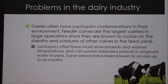The most common problems with leptospirosis are in the dairy industry. Dairies often have Leptospira contaminations in their environment. Feeder calves are the largest carriers in large operations, since they are known to suckle on the sheaths and scrotums of other calves in the feed yard. Leptospira favors moist environments and warmer temperatures and can survive extended periods in stagnant water and pens, with some serovars surviving up to 6 months.